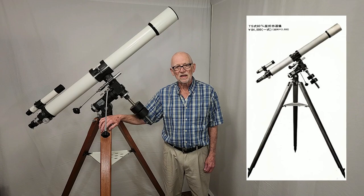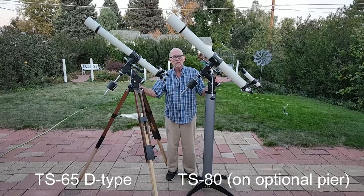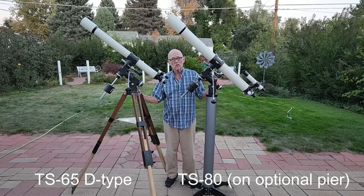The year is 1970. Earlier this year, Takahashi introduced this scope, the TS-65D, the first triplet semi-apochromat to be introduced in Japan as a commercial product.